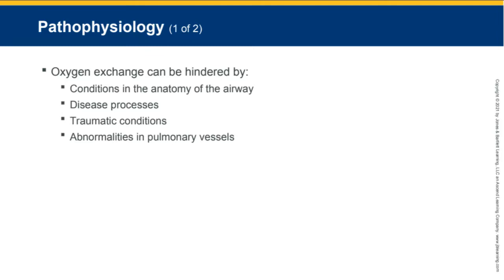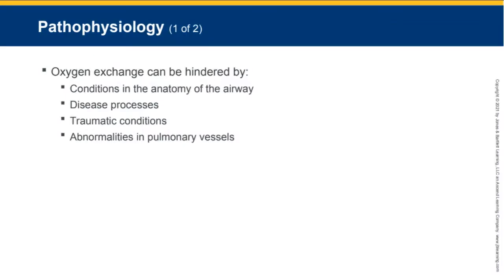The proper exchange of oxygen and carbon dioxide can be hindered by a number of things. There may be abnormal or pathologic conditions in the anatomy of the airways — for example, a swelling in the trachea or upper airways prevents oxygen from coming in and carbon dioxide from getting out. A disease process like asthma, where the bronchioles are constricted, prevents air from moving freely. Traumatic conditions such as a motor vehicle accident where the chest hits the steering wheel, or a penetrating injury to the airways, can also hinder exchange. There may also be abnormality in pulmonary vessels — a clot can impair the proper exchange of oxygen and carbon dioxide.